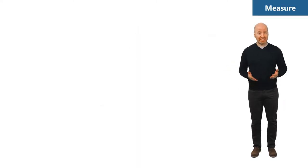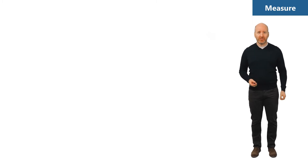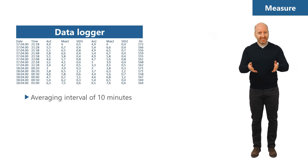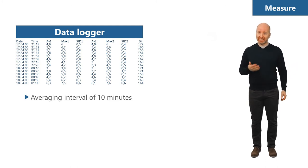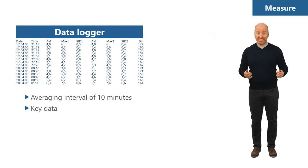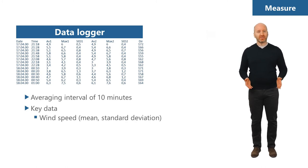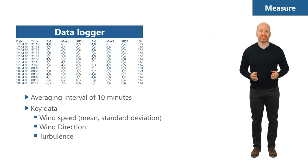All of the devices on a metmast are attached to a data logger, which typically records data in 10-minute increments. The raw data is then fed into a computer model, which generates outputs such as the mean and standard deviation of wind speed, the wind direction, the turbulence, and the maximum gust observed during the measurement period.